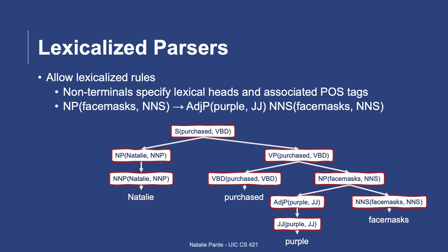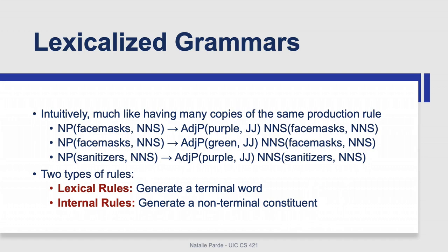So you end up with a parse that looks like what you see here. When our grammar is comprised of lexicalized rules, we have a lexicalized grammar. Intuitively, this grammar looks a lot like we have a ton of different copies of each production rule with variations for different combinations of words and part of speech tags.